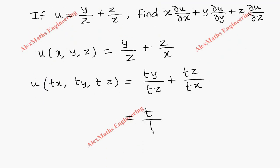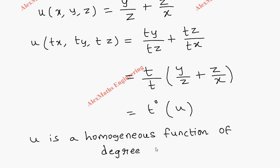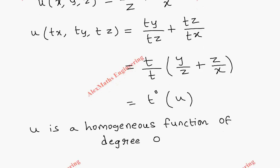So the remaining is y/z + z/x. After cancelling, this will become t^0, and this entire term is nothing but u. So we found the degree of the given function, which is 0. Therefore, u is a homogeneous function of degree 0. Then from Euler's theorem, we have x∂u/∂x + y∂u/∂y + z∂u/∂z = n·u.